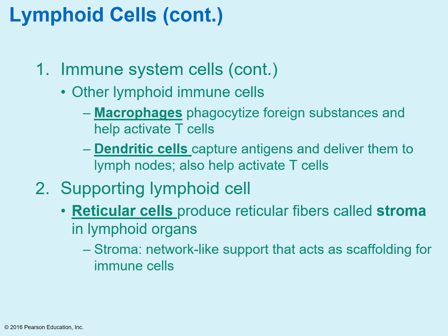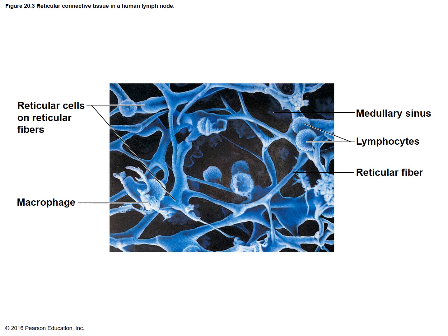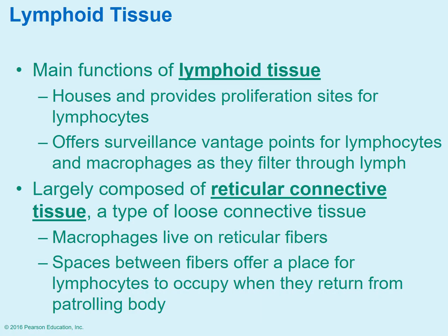Supporting lymphoid cells include reticular cells, which help produce fibers called stroma in the organs. The stroma essentially sets up scaffolding to help support the immune cells. In this picture, you can see all those strands — that's the reticular fibers or stroma, that scaffolding. The lymphocytes, which look like round balls, can attach to that scaffolding and hang out there. As anything passes through the sinus, where the lymph is moving, they can basically be on surveillance and check what's passing through — this is okay, that's not, now we need to start the process of attacking it.